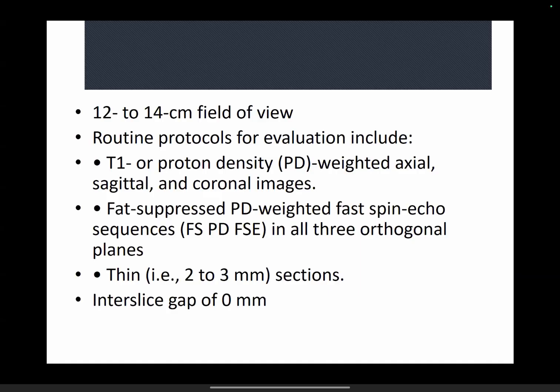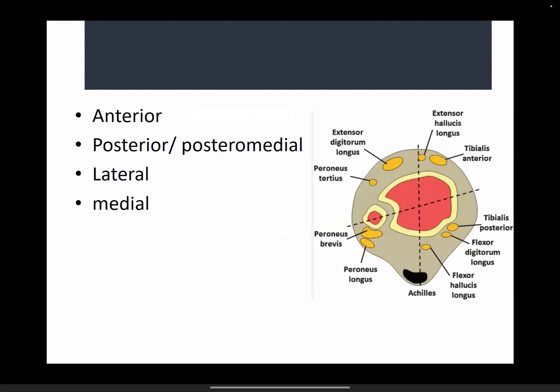Especially if you're working in a government hospital where there's a time crunch and scans have to be finished in 20-25 minutes, three PDFs, one STIR coronal, and one T1 coronal is what you need. Now coming to the anatomy.